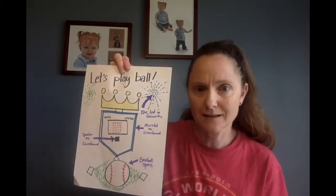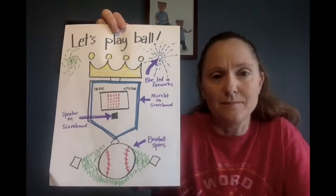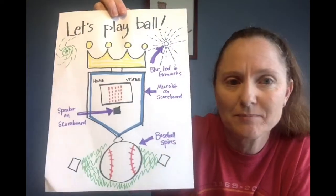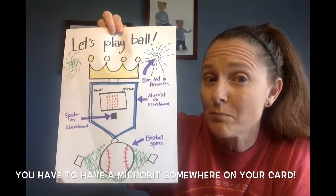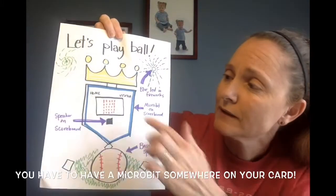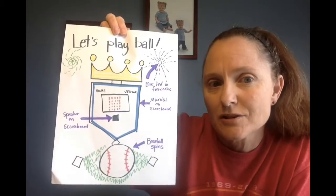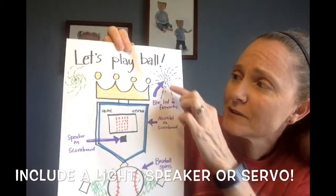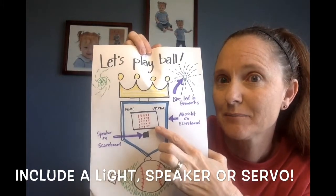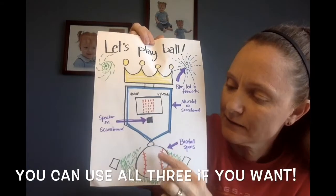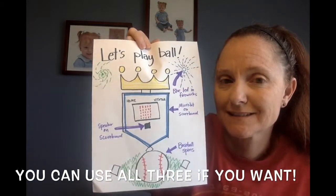The first part you're starting today is to draw out a plan. You could do it on paper. I decided to make a Let's Play Ball baseball card — I just got a piece of paper and sketched out what I want it to look like. Make sure you show where your micro:bit would go. I put mine in the middle of a scoreboard. I'm going to add a flashing light up here, a speaker in the scoreboard, and underneath this baseball I'm going to have a servo so my baseball is going to spin.